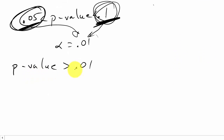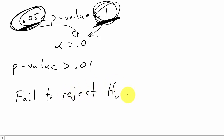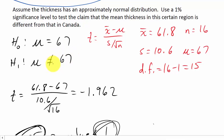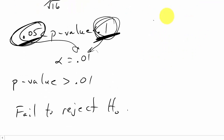Since our p-value is greater than alpha (0.01), we fail to reject the null hypothesis H₀. At the 1% level of significance, the sample evidence does not support the claim that the average thickness of the avalanche in that certain region is different from that in Canada. We cannot reject the null because our p-value was greater than alpha.